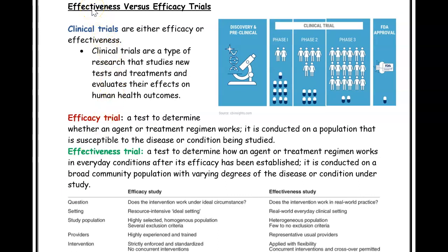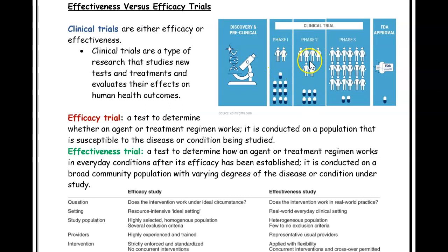Let's look at the difference between an effectiveness trial and an efficacy trial. Before that, let's look at clinical trials, because clinical trials are either effectiveness trials or efficacy trials. A clinical trial is basically a type of research where they study new tests or new treatments and figure out whether it works. For example, they give a new drug to a small amount of people first, then to more people, and then even more people, until it gets approved for everyone to use.